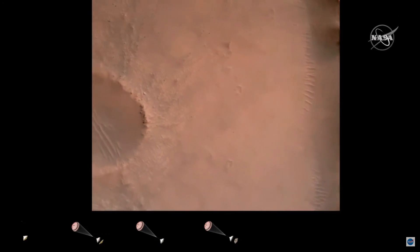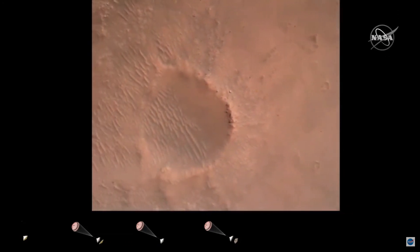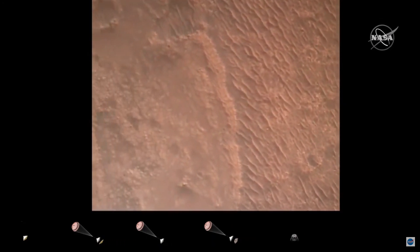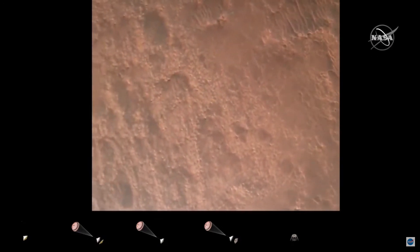We have confirmation that the back shell has separated. We are currently performing the divert maneuver. Current velocity is about 75 meters per second at an altitude of about one kilometer from the surface of Mars.